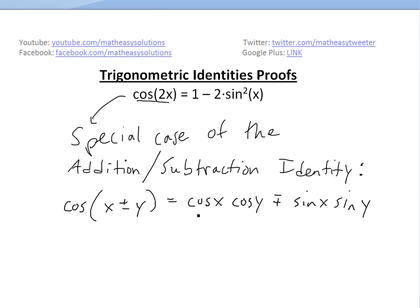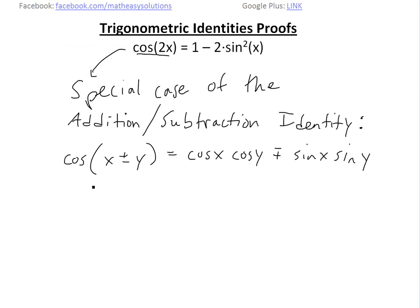So once again you can see the link below in the info of this video to the proof of this identity, and then basically this is a special case where we have x equals to y. So when we set x equals to y, in this case we'll just make y equal to x.